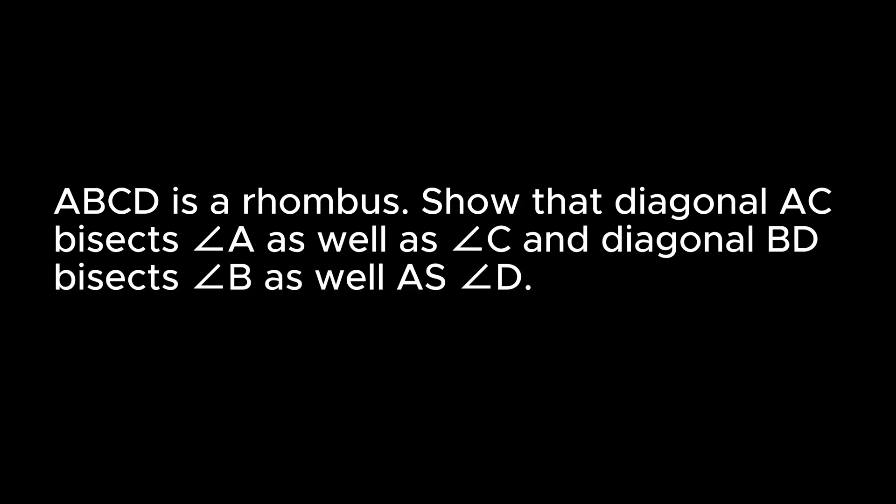The problem states that in rhombus ABCD, diagonal AC bisects angle A as well as angle C, and diagonal BD bisects angle B as well as angle D. Since ABCD is a rhombus, all sides are equal. Let AC be the diagonal making angles 1, 2, 3, and 4 respectively. We need to prove angle 1 equals angle 2 and angle 3 equals angle 4.